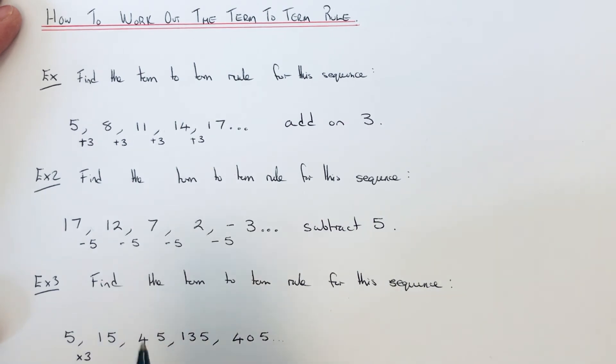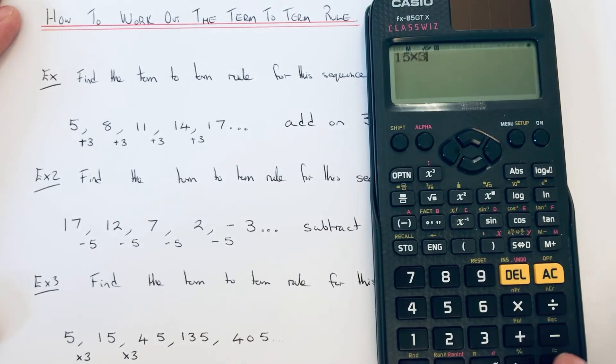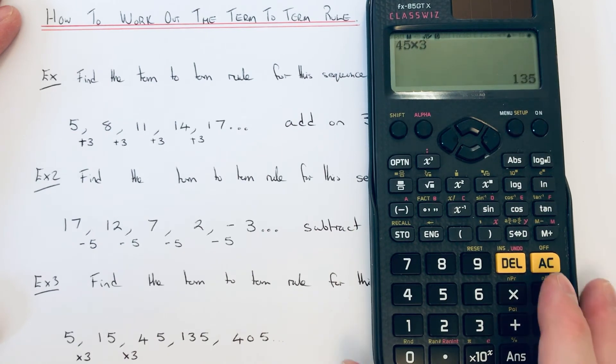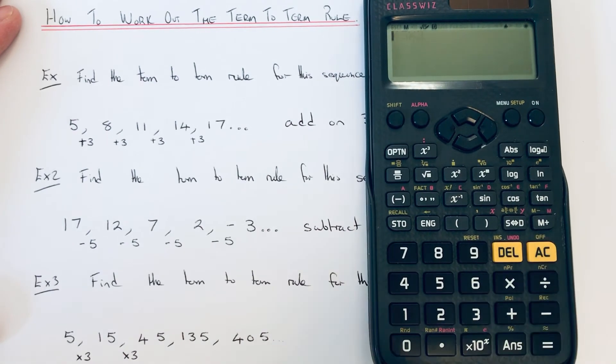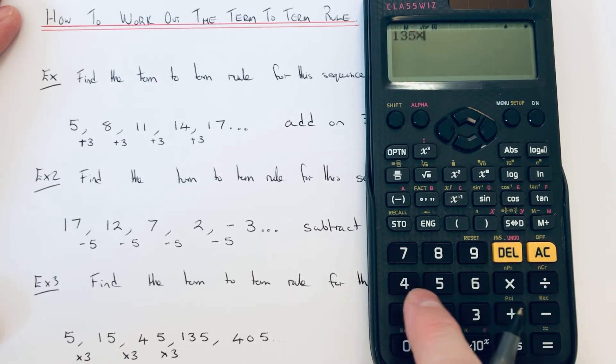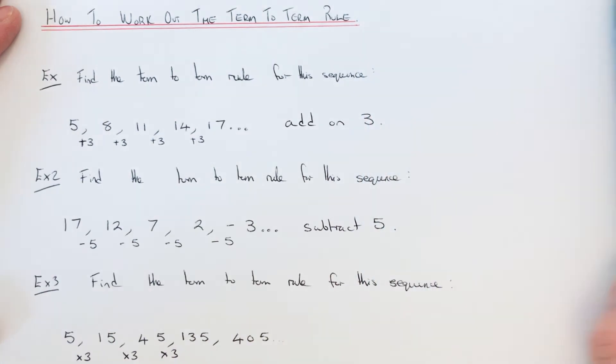So 15 times 3 is also 45. Check that on your calculator. 45 times 3 is that 135? Yes it is. And does it work for the last one? So that's 405. So the term to term rule for this sequence is to multiply by 3.